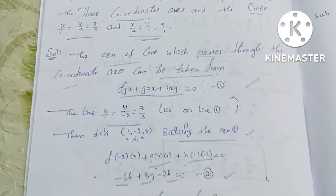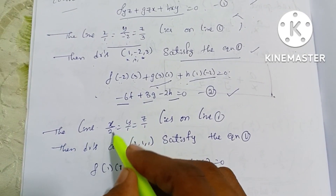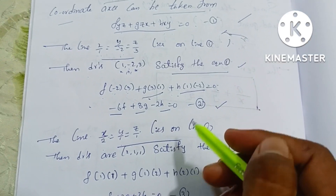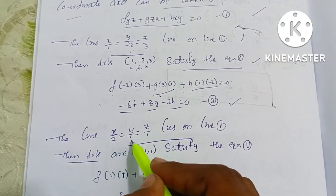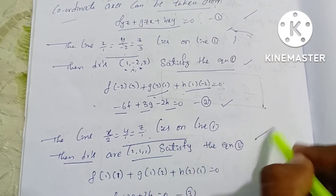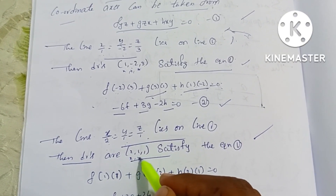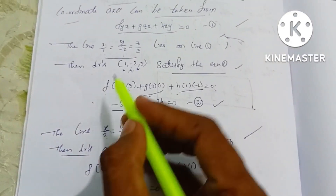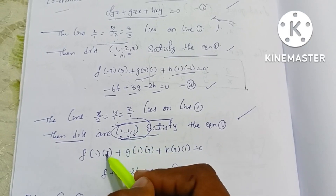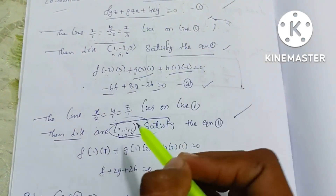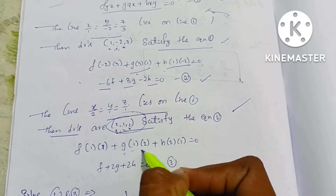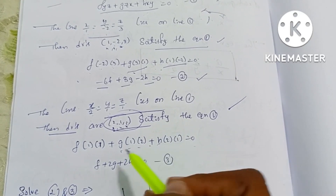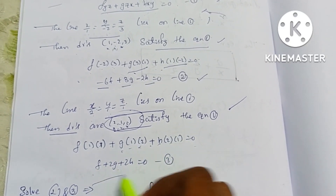For the second line, x/2 = y/1 = z/1, the direction ratios are 2, 1, 1. These satisfy Equation 1. Substituting: f·y·z with (1)(1) gives f, plus g·z·x with (1)(2) gives 2g, plus h·x·y with (2)(1) gives 2h, equal to 0. This is Equation 3: f + 2g + 2h = 0.